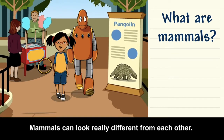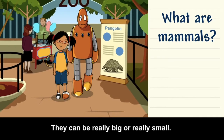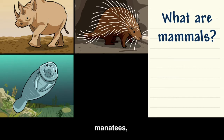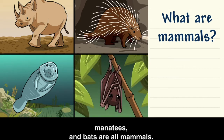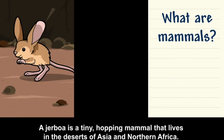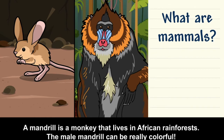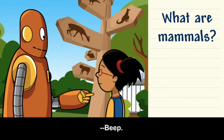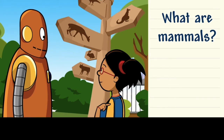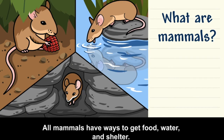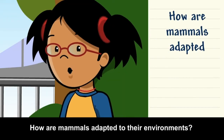Mammals can look really different from each other — they can be really big or really small. Rhinos, porcupines, manatees, and bats are all mammals. A gerboa is a tiny hopping mammal that lives in the deserts of Asia and northern Africa. A mandrill is a monkey that lives in African rainforests — the male mandrill can be really colorful. People are mammals too. All mammals have ways to get food, water, and shelter. How are mammals adapted to their environments?